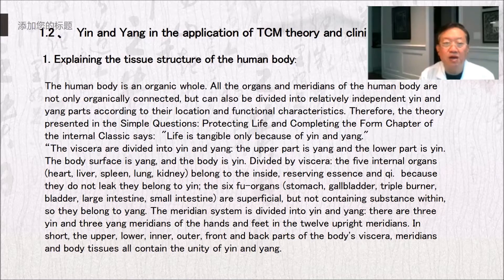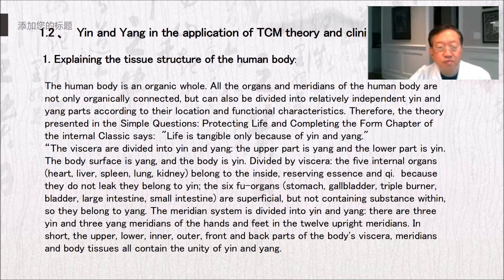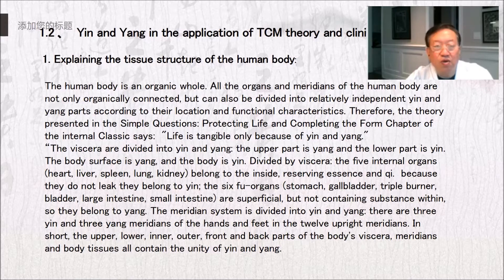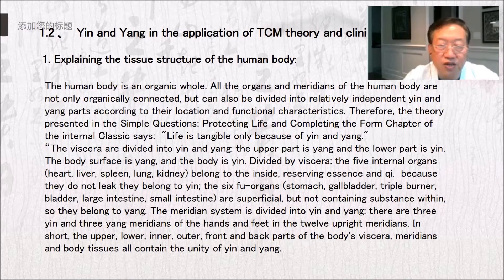Divided by viscera, the five internal organs — heart, liver, spleen, lung, and kidney — belong to the inside, reserving essence and qi. Because they do not leak, they belong to yin. The six fu organs — stomach, gallbladder, triple burner, bladder, large intestine, and small intestine — are superficial but not containing substance within, so they belong to yang. The meridian system is also divided into yin and yang; there are three yin and three yang meridians of the hands and feet in the 12 upright meridians. In short, all body tissues contain the unity of yin and yang.